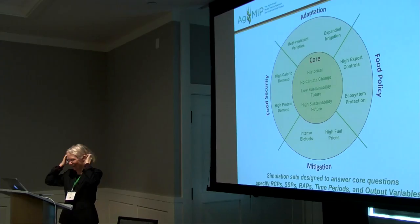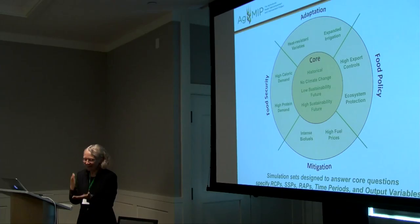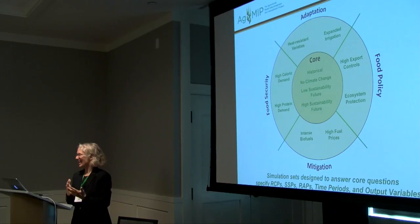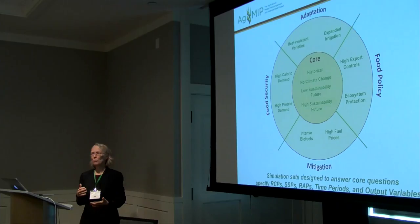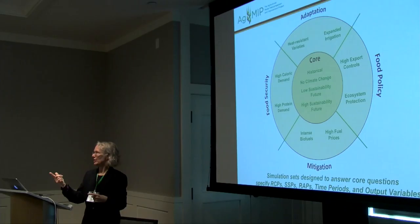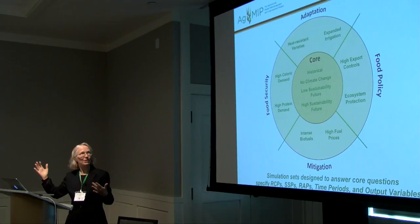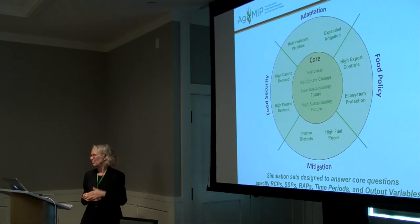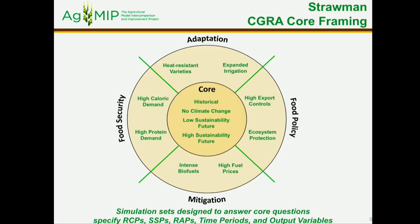We took those four detailed questions and made a concentric circle diagram — a straw man. Clearly, we have a core consisting of a set of scenarios: RCPs, SSPs, and RAPs that we would all do together at global and regional scales. We also need to look at historical time periods to see how well these models do and to bring in extreme events, and then the future without climate change, a low-sustainability future, and a high-sustainability future.